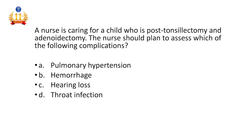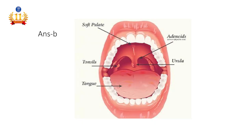Second question: The nurse is caring for a child who is post tonsillectomy and adenoidectomy. The nurse should plan to assess which of the following complications? Pulmonary hypertension, hemorrhage, hearing loss, or throat infection. The answer is hemorrhage. For the patient with tonsillectomy and adenoidectomy, the main complication is hemorrhage. We can assess this by observing the swallowing pattern — the patient will be frequently swallowing.